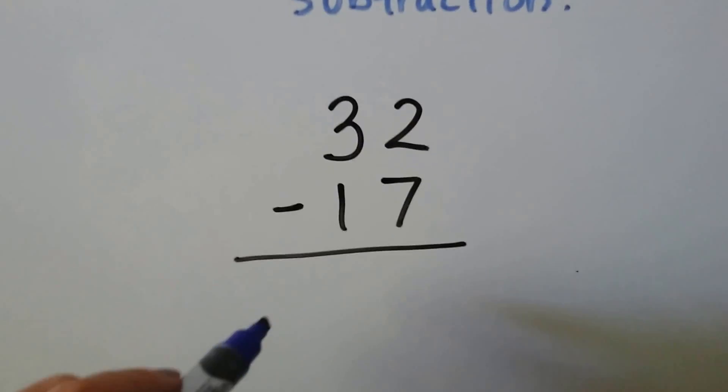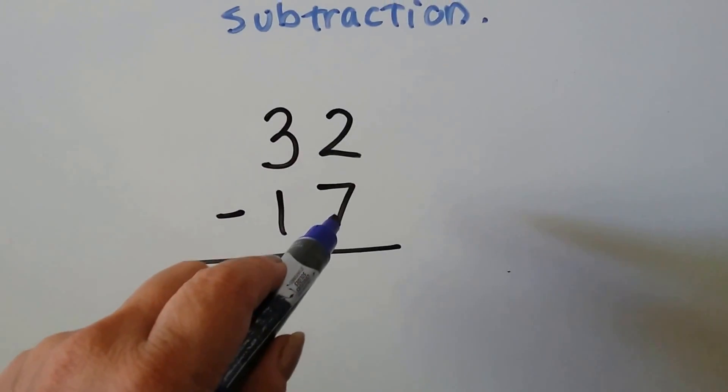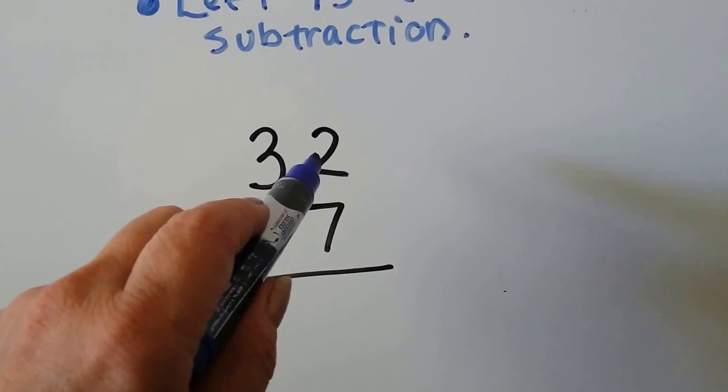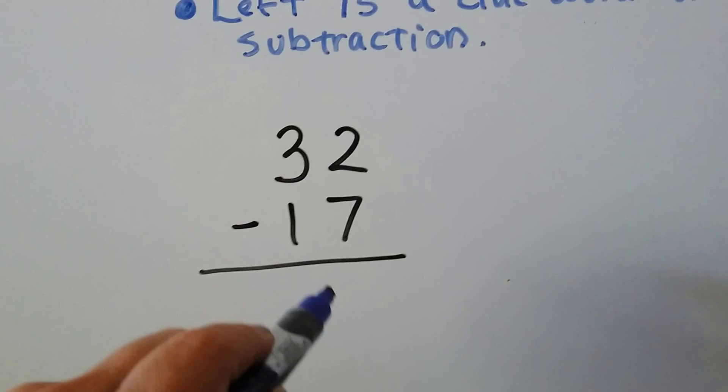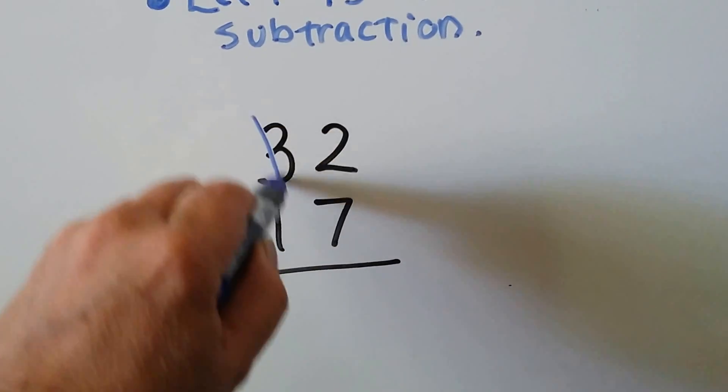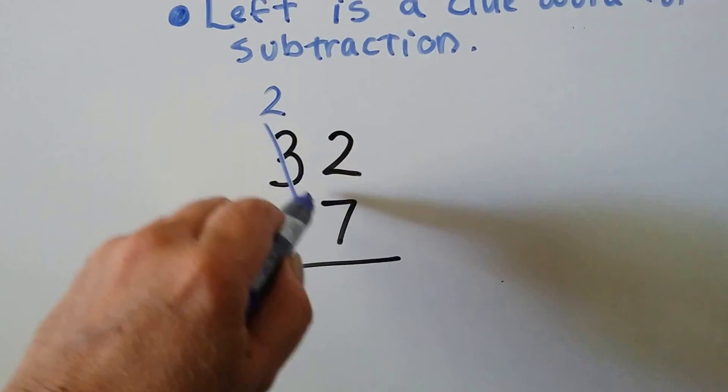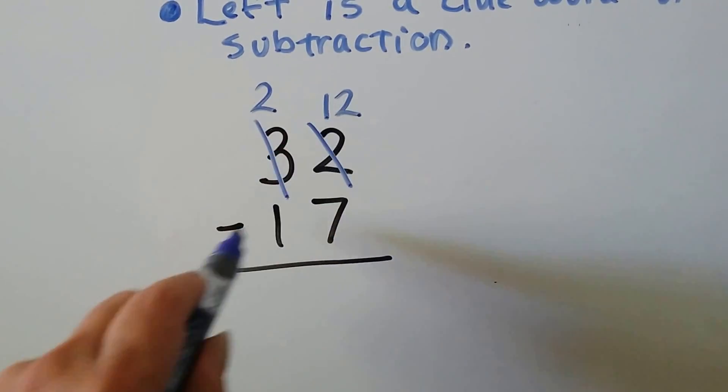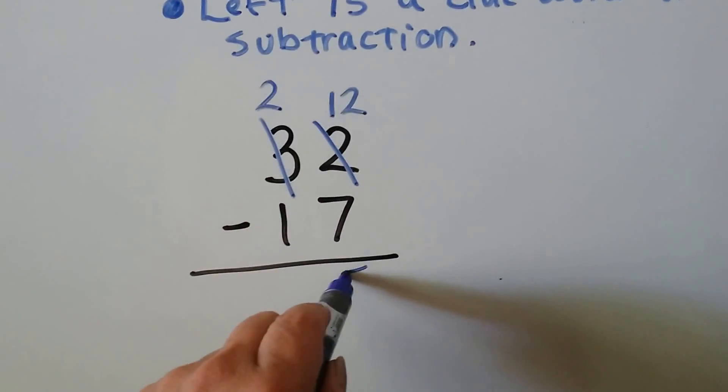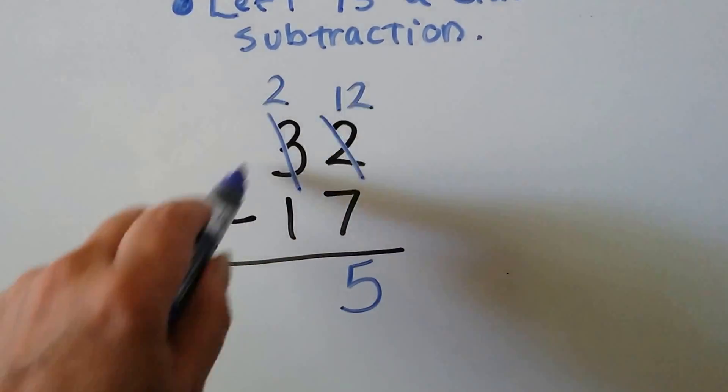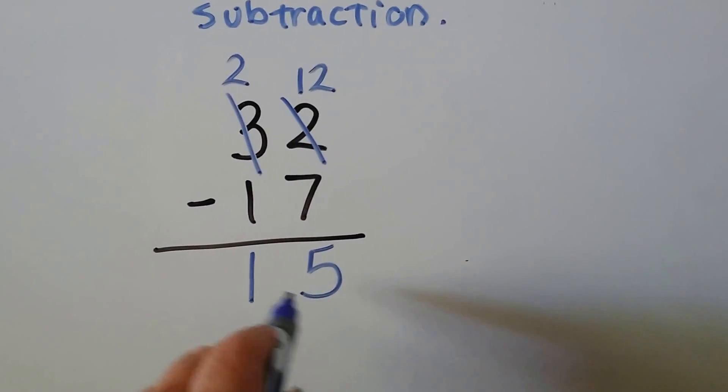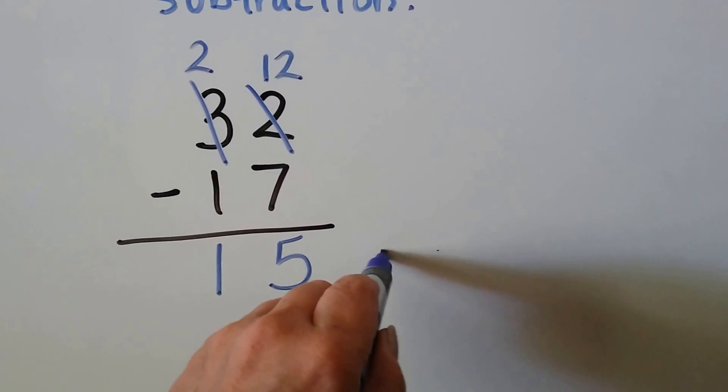We write a subtraction equation, 32 minus that 17. And whatever the difference is, is going to tell us how many were still left in the parking lot. We look at the ones place. We see that there's a 7 in the ones place of the subtrahend, and there's a 2 in the ones place of the minuend, and that's smaller. So we need to regroup. The 3 becomes a 2. We give the 10 to the ones place, and that becomes a 12. 12 minus 7, that's a 5. And 2 minus 1 is a 1. We have to remember to label our word problems. 15 what? 15 trucks.